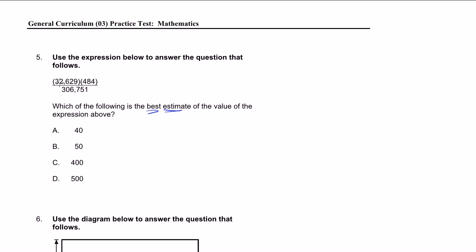So if I wanted to round this out at 32,629, I'd say that's approximately equal to 30,000 times, instead of 484, I'm going to say that's roughly equal to 500. And then divide that by 306,751. I'm going to say that's roughly equal to 300,000.